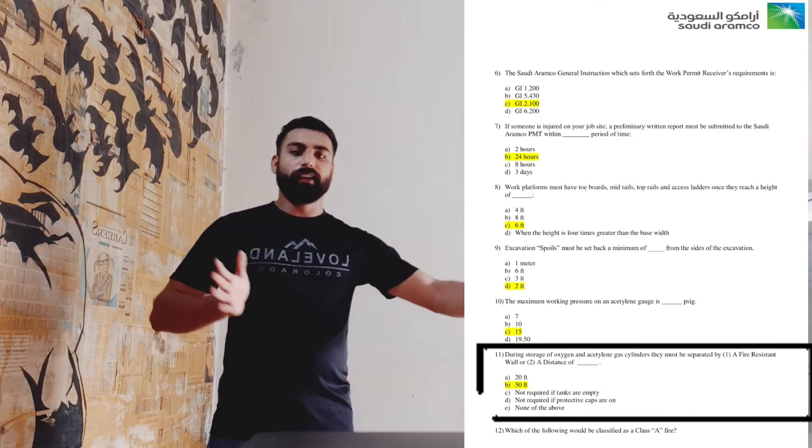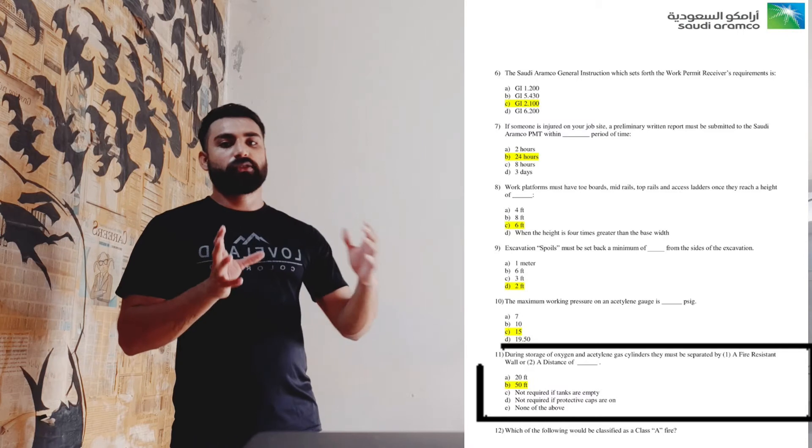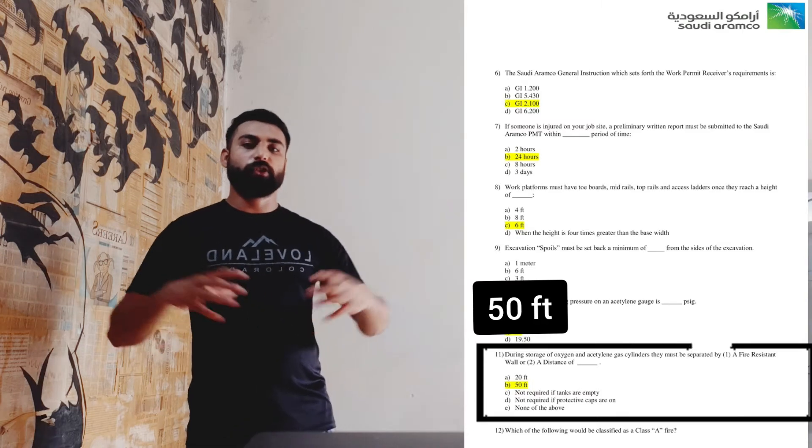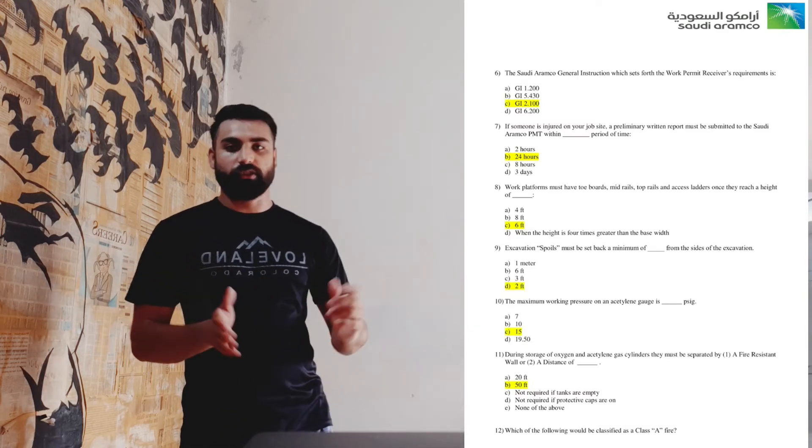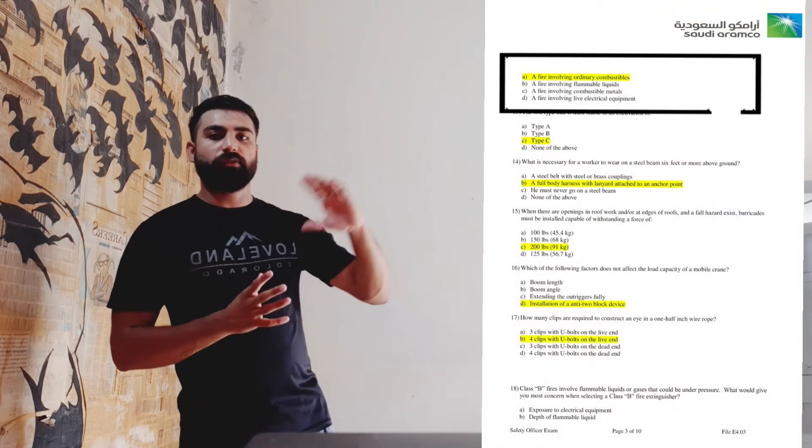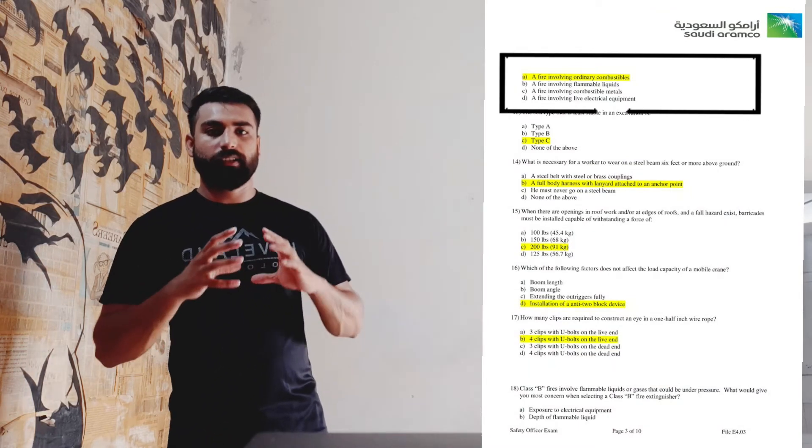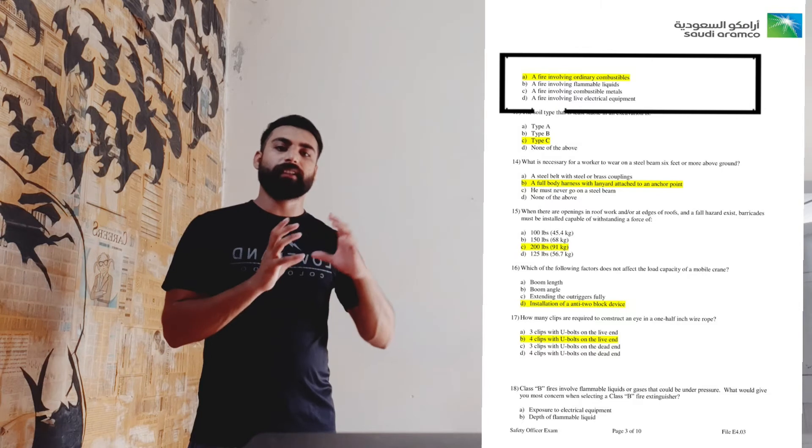They should either be having a fire-resistant wall, or otherwise they should be kept at least 50 feet from each other. Now jumping towards question number twelve. Question number twelve is regarding the A class of fire. As we know there are different classes of fire, so they are particularly asking what is the A class of fire.